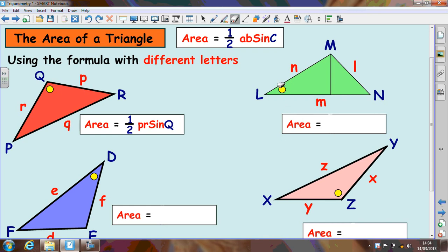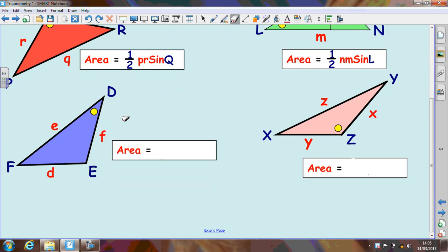In the second example, the angle is at the letter L so it will be sine L at the end and the two surrounding sides are N and M. They recreate that kind of V shape. Down below the angle is at D so it will be sine of D and the two surrounding sides are E and F. So it will be a half EF sine D. And finally the angle is at Z so it will be sine of Z and the two surrounding sides are X and Y. There's your formula.